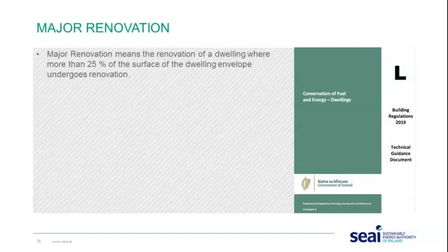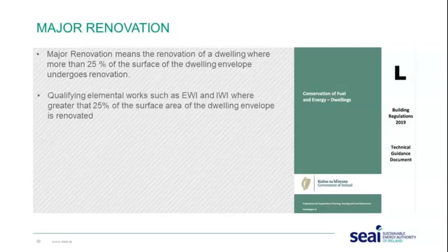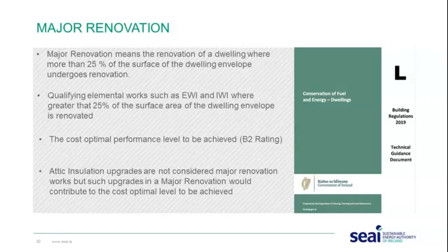The dwelling envelope includes all elements through which the building can lose heat to the external environment — walls, windows, floors, and roof. Where greater than 25% of the surface area of the dwelling envelope is renovated, the cost optimal performance level — essentially a B2 rating — is to be achieved. Attic insulation works are not themselves considered a major renovation, but attic works within a major renovation would contribute to achieving the cost optimal level.